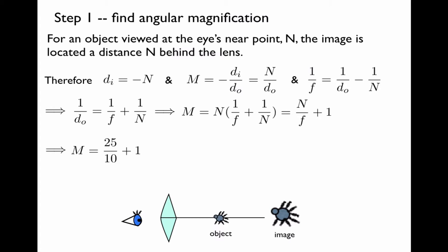And now we know the focal length, which is 10 centimeters, and we know the location of the eye's near point, which is 25 centimeters. So we obtain an angular magnification of 3.5.